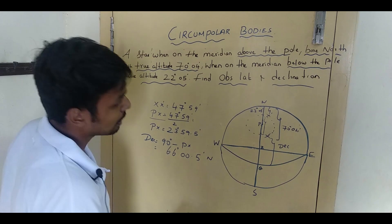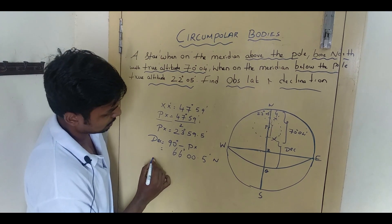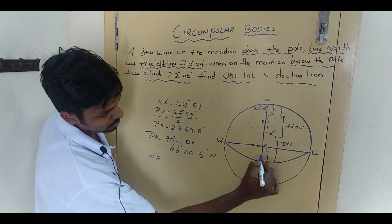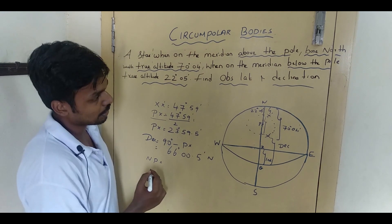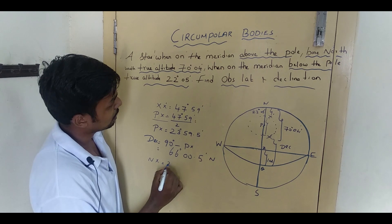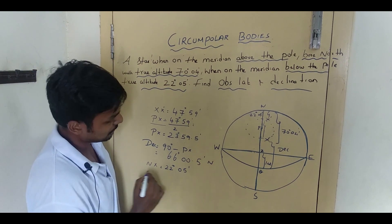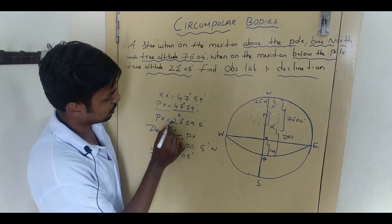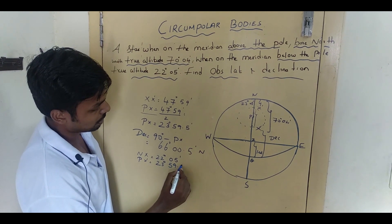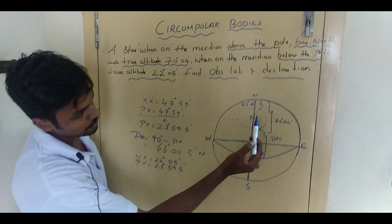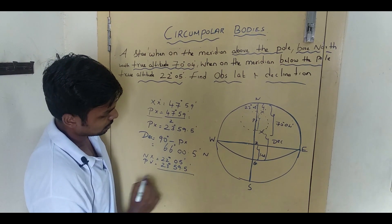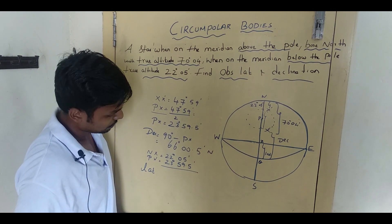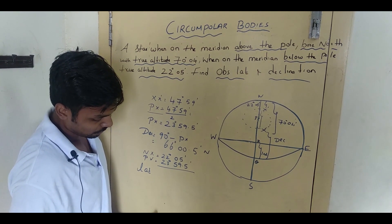For latitude, NP equals the pole distance from the zenith to the pole — that is my latitude. I know NX' is 20 degrees 05 minutes, and PX' equals 23 degrees 59.5 minutes — both halves are the same since PX and PX' are equal. Adding together: latitude equals NX' plus PX', which is 20 degrees 05 minutes plus 23 degrees 59.5 minutes, giving latitude equal to 46 degrees 04.5 minutes North.